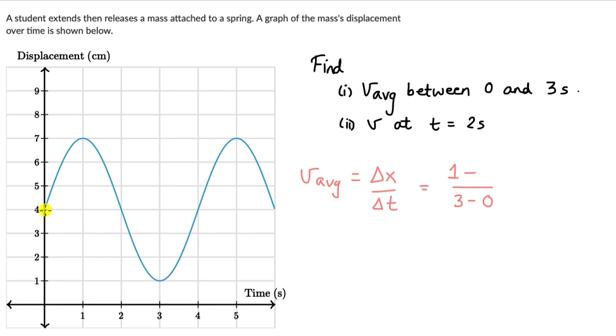So when you work this out, this becomes minus 3 divided by 3, and this comes out to be equal to minus 1 centimeter per second.